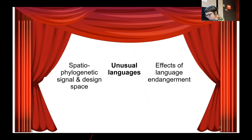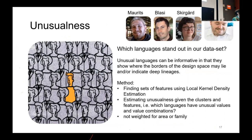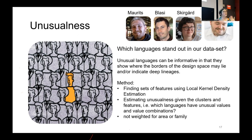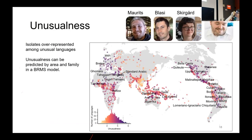Next, unusual languages let us see the limits of the design space. We took all features, organized them into sets using local kernel density estimation, and asked: not only what are unusual feature values, but what are unusual combinations of feature values within these groups? This analysis — not weighted for area or family — gives an unusualness score per language based on grammar data, where dark purple means very unusual and light means very typical.